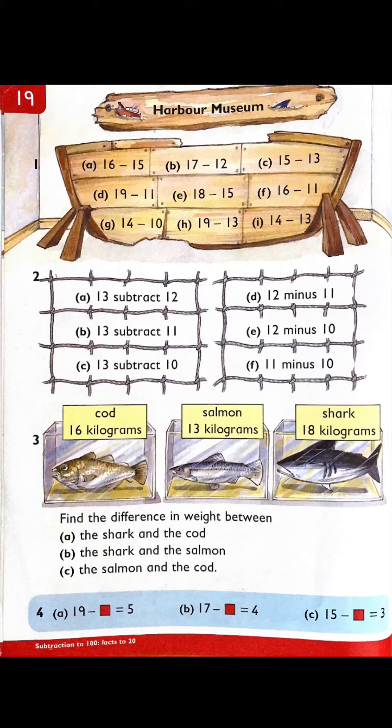Okay Sun and Moon, we are continuing with our subtraction. Let's have a look at number one. It's just subtraction with numbers from 20, and you can use your number line to do this or counting on, whichever you find easier. Number two is still subtraction, but you're just seeing the word subtract or the word minus.